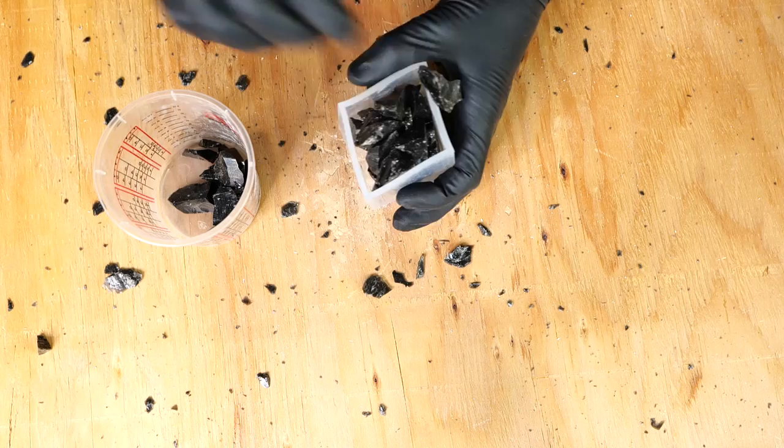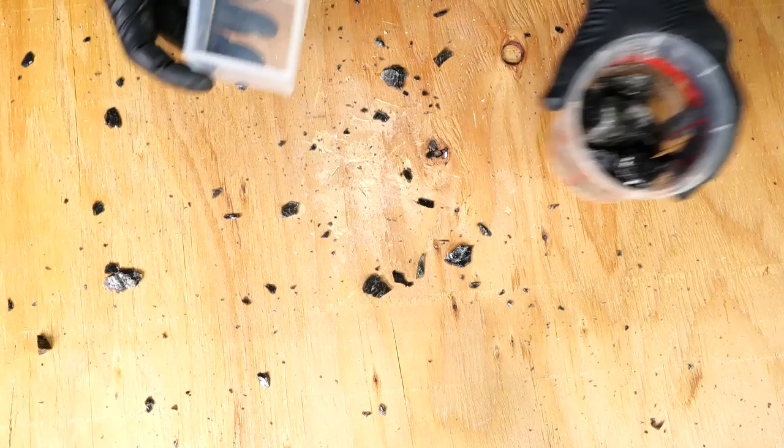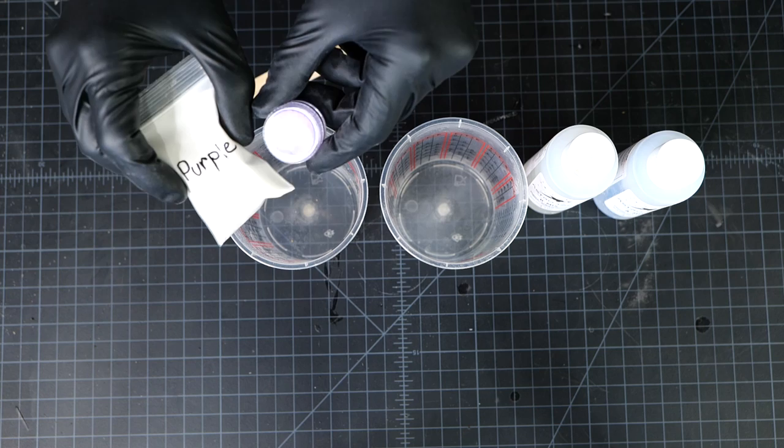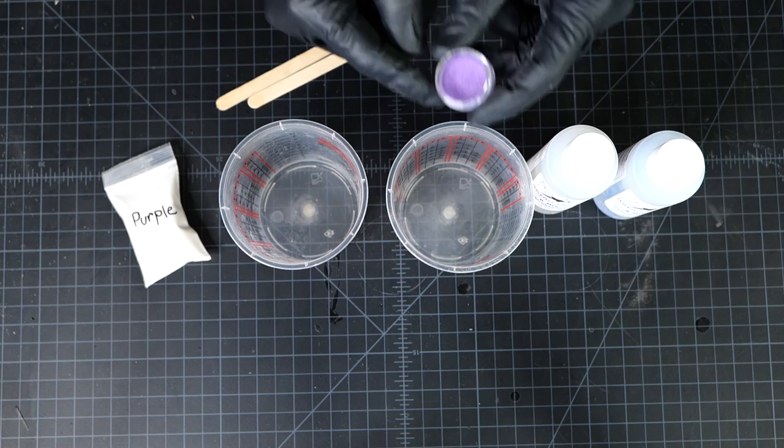All right, I'm going to pour out two separate containers of resin. One of them will glow and be opaque and have this purple coloring in it. The other one will be slightly transparent but just have the purple coloring in it.